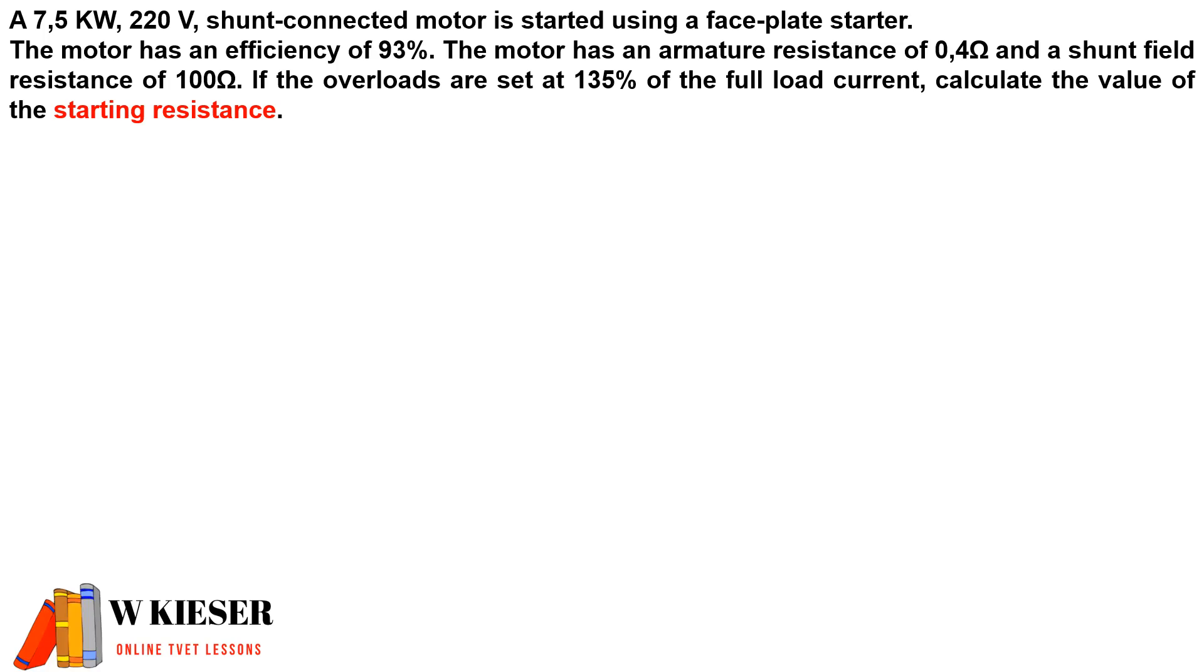A 7.5 kilowatt, 220 volt shunt connected motor is started using a faceplate starter. The motor has an efficiency of 93%, the motor has an armature resistance of 0.4 ohms and a shunt field resistance of 100 ohms. If the overloads are set at 135% of the full load current, calculate the value of the starting resistance for our faceplate starter.